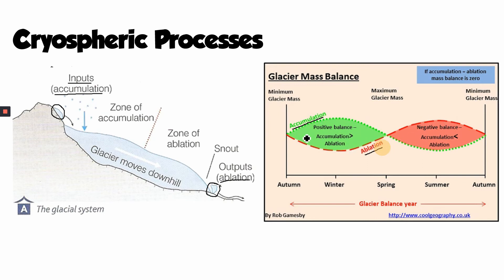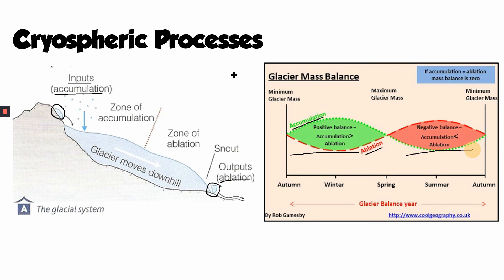Over time, we should get a dynamic equilibrium where the positive balance in winter is equal to the negative balance in spring and summer, so the glacier doesn't really change in size — getting a little smaller in summer and a little bigger in winter, but broadly staying the same. That would be true if the climate stayed steady. As we know, the climate fluctuates quite significantly, both naturally and because of human activity.